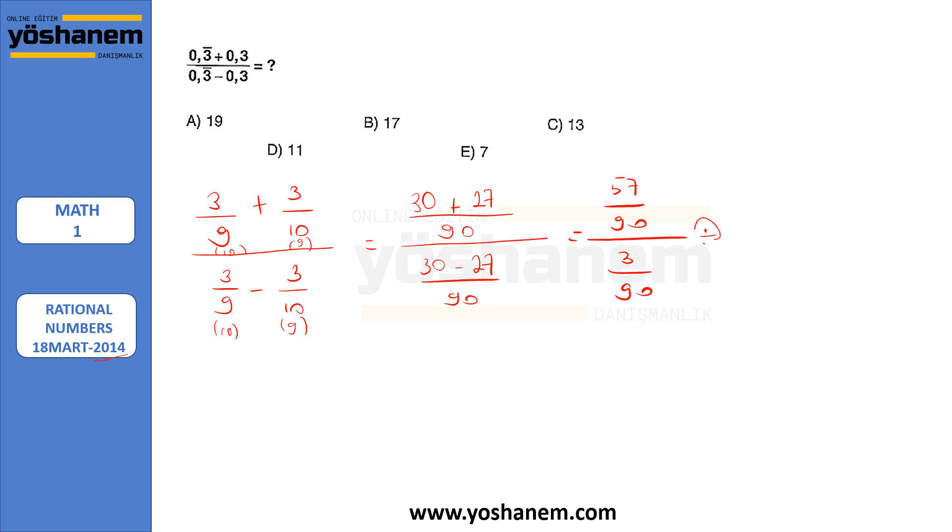So there is a division here. That's why I am going to write it as multiplication. 90 over 3. We can cancel 90s. And it's 57 over 3, and this is 19. So this is the answer A.